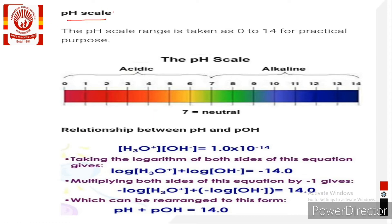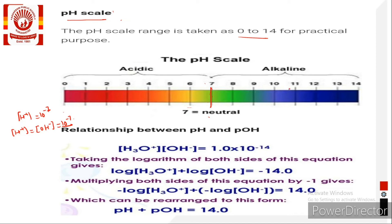From the pH value we can develop a pH scale, which ranges from 0 to 14 for practical purposes. For pure water, [H⁺] = [OH⁻] = 10⁻⁷, so pH = 7, which represents a neutral solution. When pH is less than 7, the H⁺ ion concentration is greater than 10⁻⁷, so the solution is acidic. When pH is greater than 7, the H⁺ ion concentration is low, meaning the solution is alkaline by nature.